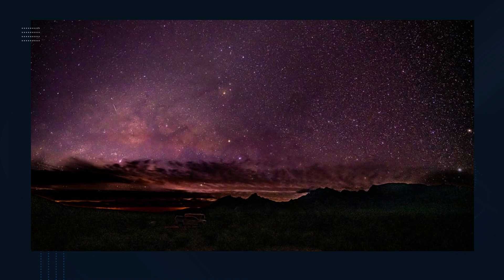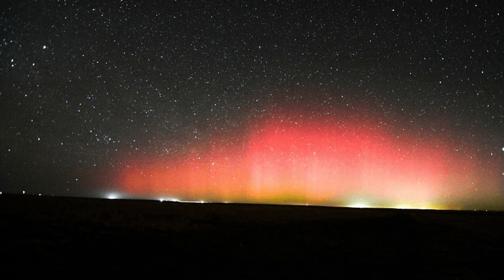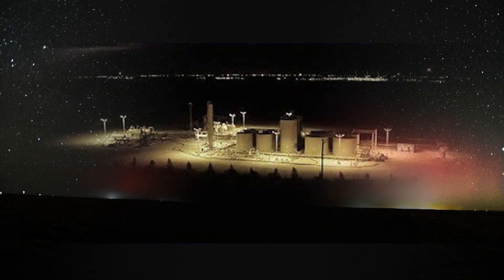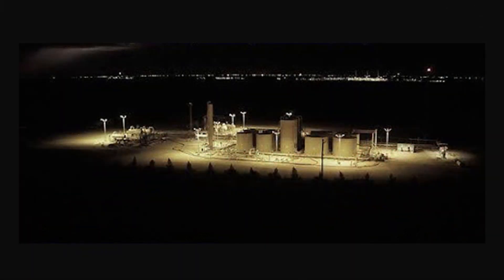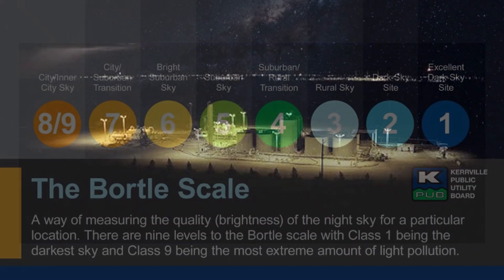State representatives established legislation to limit light illumination. Light is an impediment when the glow illuminates the sky and limits visibility. The International Dark Sky Association supports city ordinances restricting light trespass, and Texas Parks and Wildlife has supported the dark sky initiative.